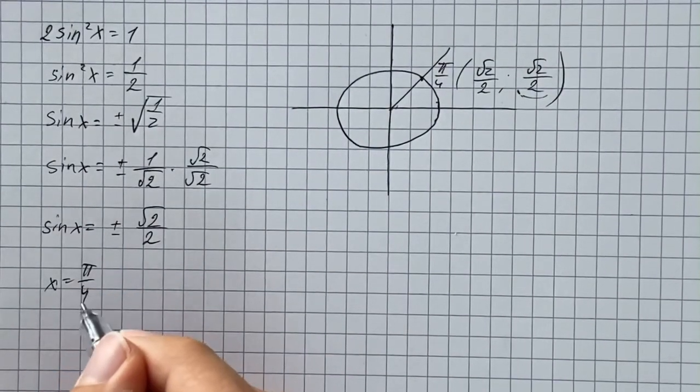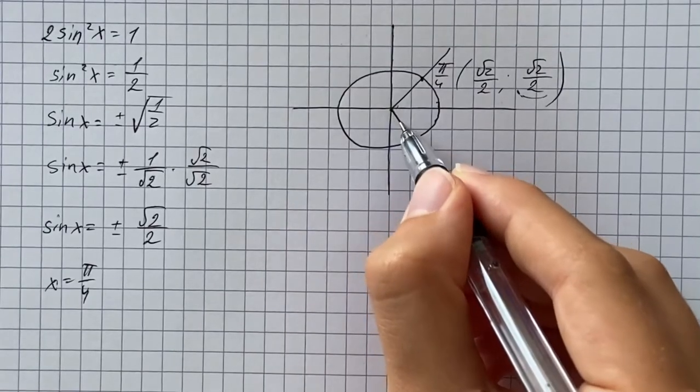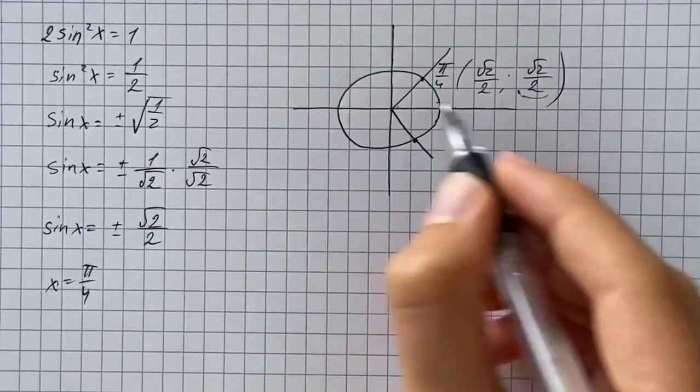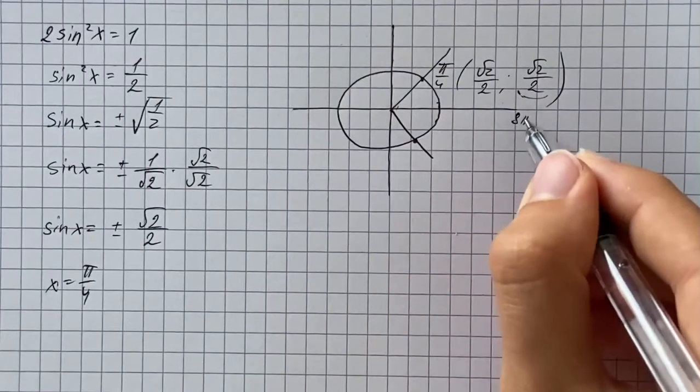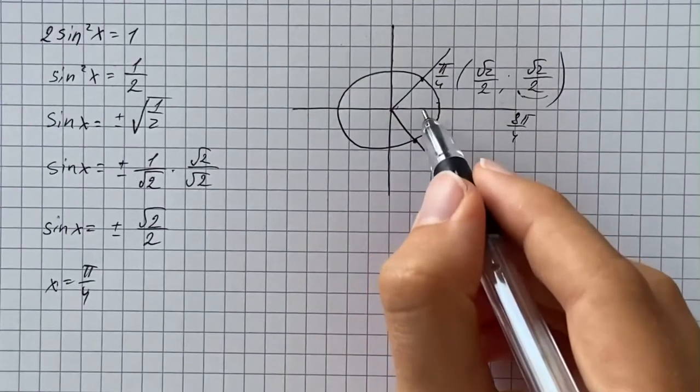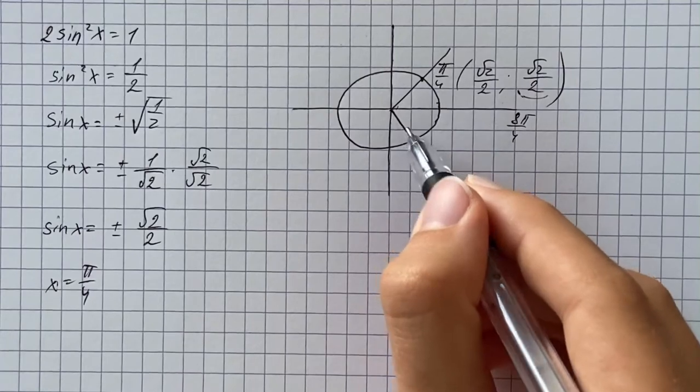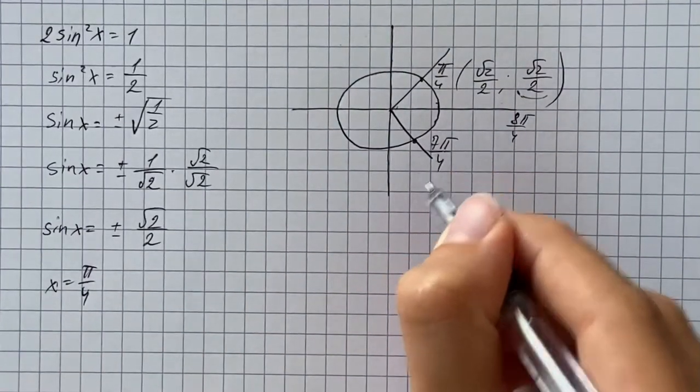Then we're going to have the same angle in the fourth quadrant. So that's going to be, if we go all the way around the circle, we get 8 pi over 4, and then we backtrack pi over 4, and that gives us 7 pi over 4.